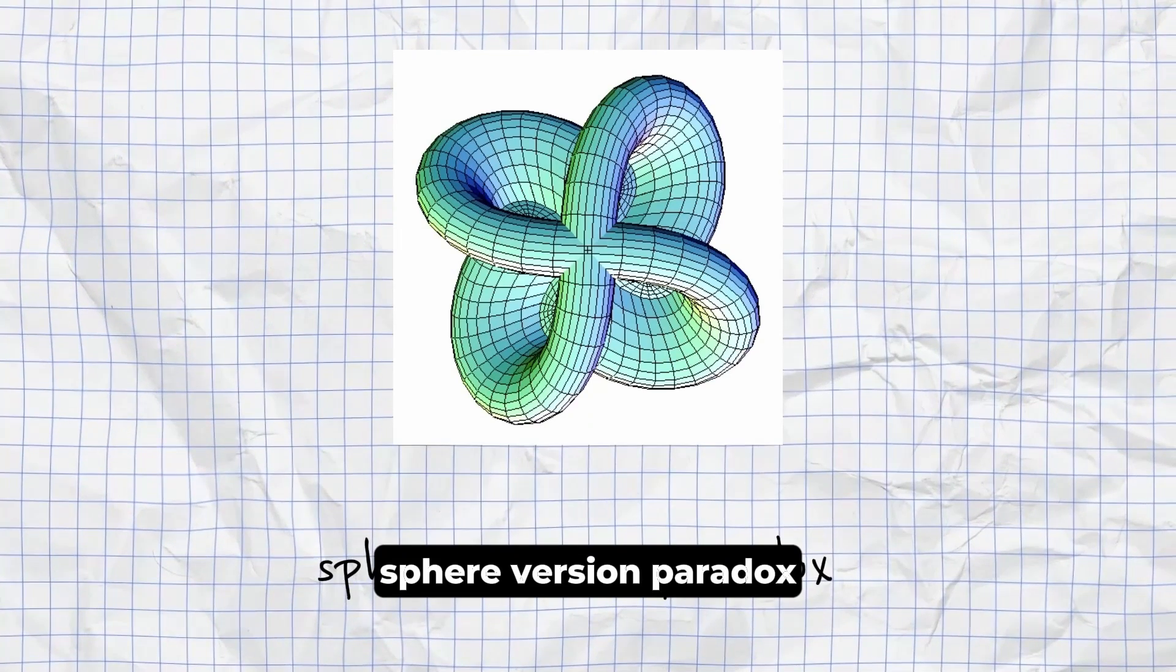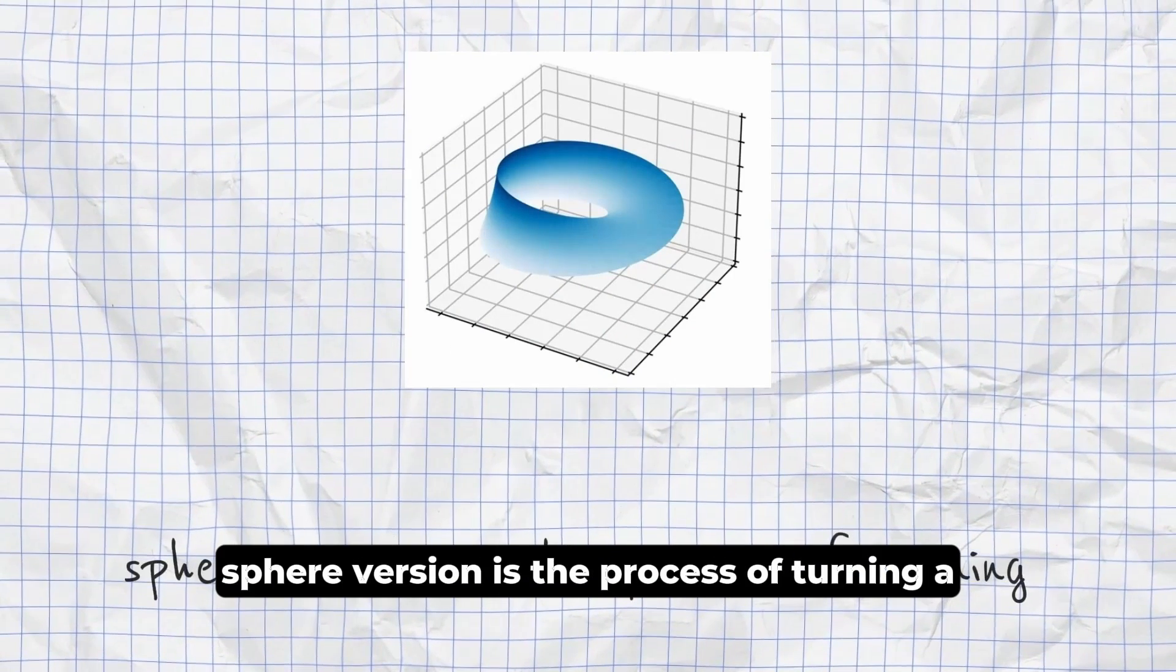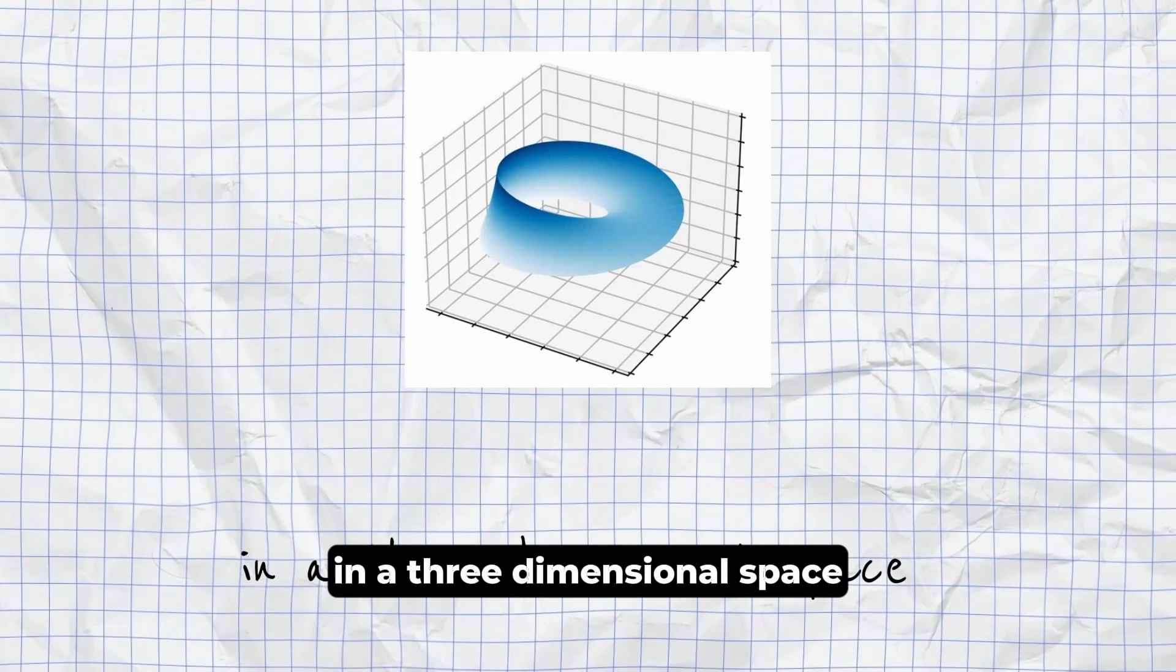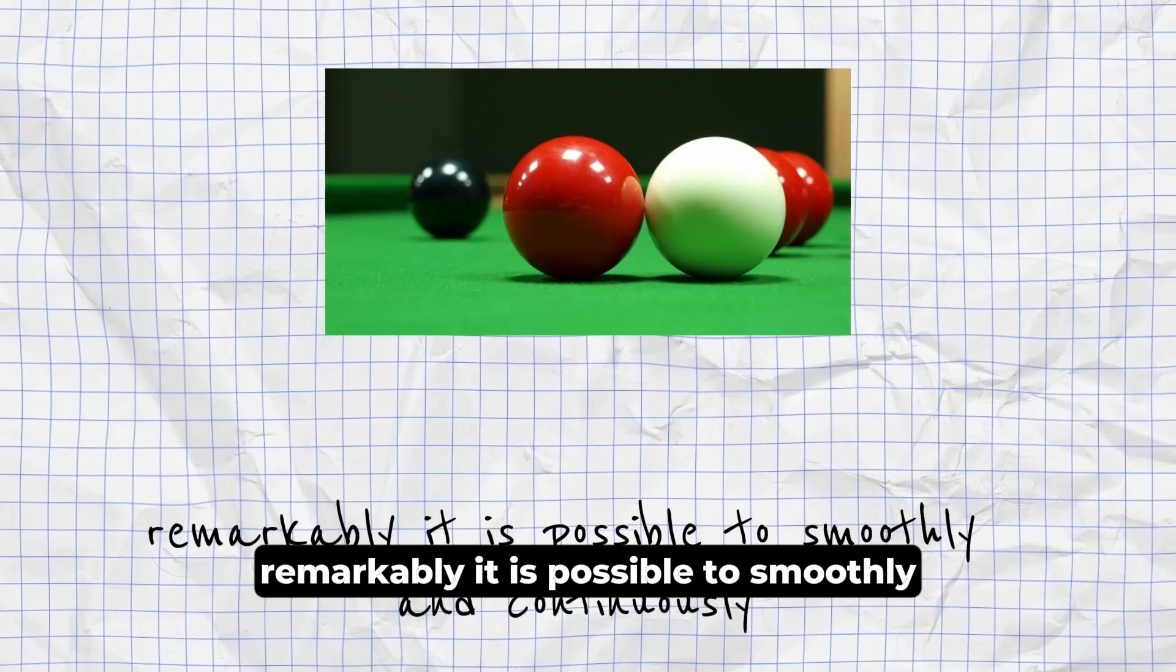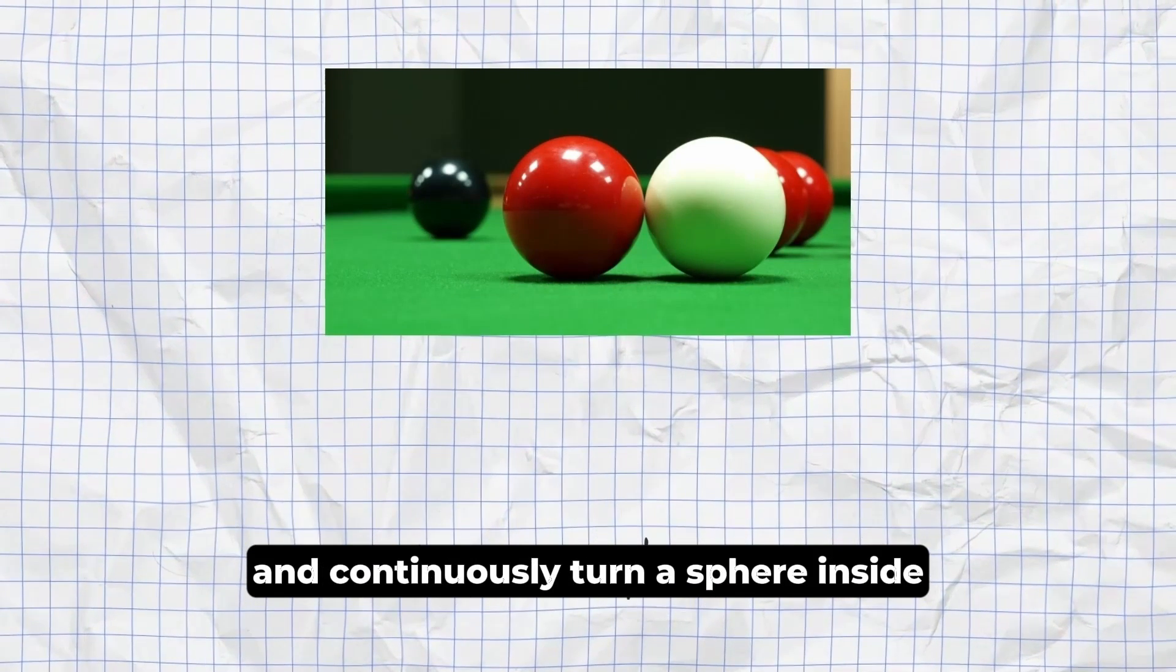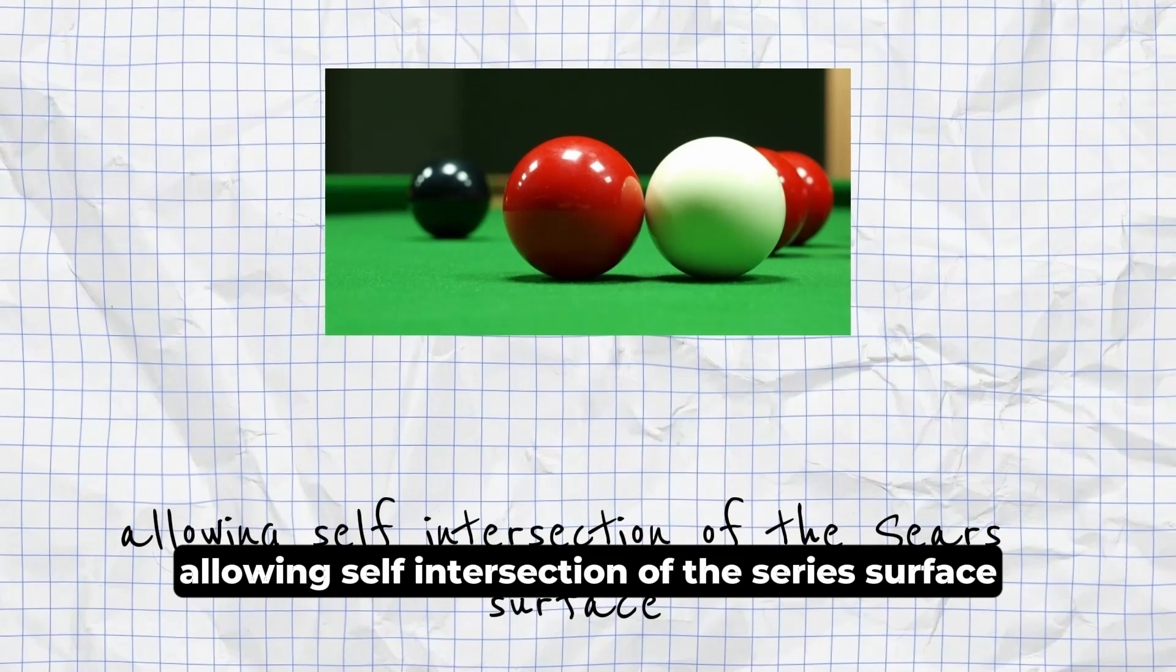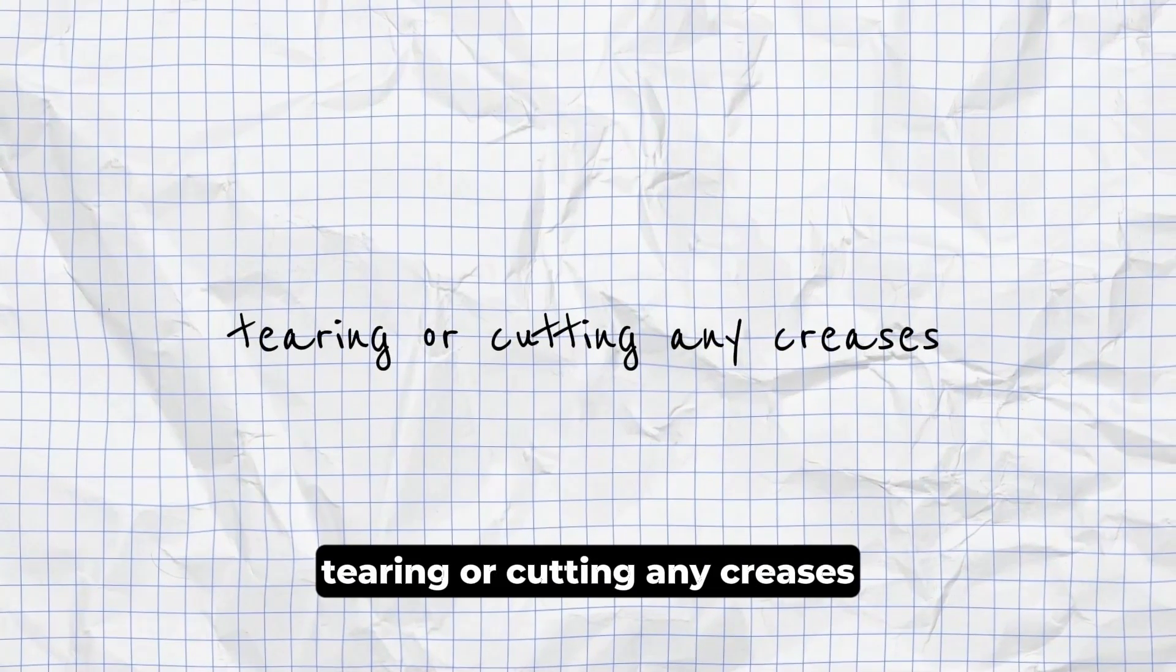Sphere Eversion Paradox. In differential topology, sphere eversion is the process of turning a sphere inside out in a three-dimensional space. Remarkably, it is possible to smoothly and continuously turn a sphere inside out this way, allowing self-intersection of the sphere's surface, without cutting, tearing, or creating any creases.